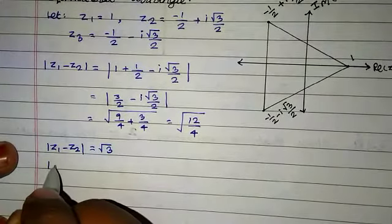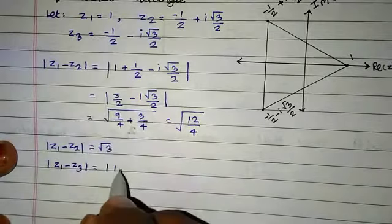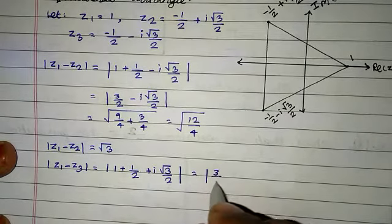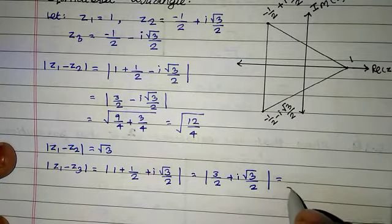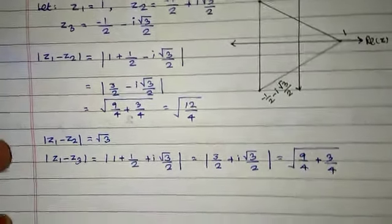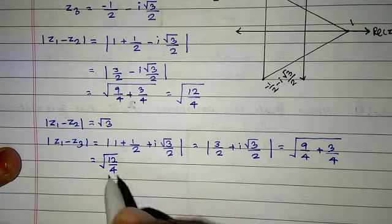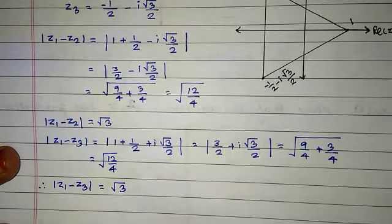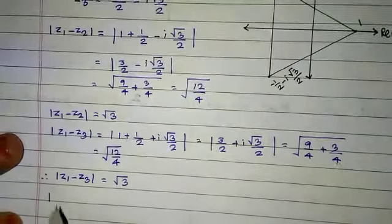Next, modulus of z1 minus z3 equals modulus of 1 minus (minus 1 by 2 minus i root 3 by 2), which equals modulus of 3 by 2 plus i root 3 by 2, equal to root of real part squared plus imaginary part squared, equal to root of 9 by 4 plus 3 by 4, equal to root of 12 by 4. Therefore modulus of z1 minus z3 equals root 3.